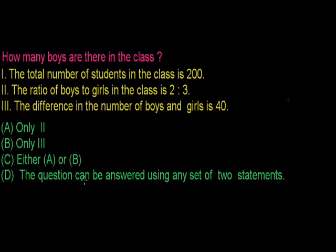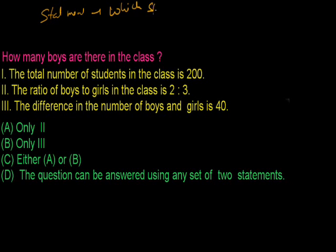Example: How many boys are there in a class? Statement 1: The total number of students in the class is 200. Statement 2: The ratio of boys to girls is 2 to 3. Statement 3: The difference in the number of boys and girls is 40. Now, which statements are required to get the answer?